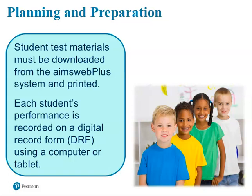Each student's performance is recorded in a digital record form using a computer or electronic tablet. The digital record form includes all the instructions you need for administering the measure to students, including what to say to the students and correct and incorrect response information. The digital record form will guide examiners through the appropriate screens via computer. Scores are automatically generated when the student responses are submitted to AmesWebPlus. Examiners will not need any printed materials to administer and record scores, and the digital record forms also have a built-in timer so examiners will not need stopwatches.